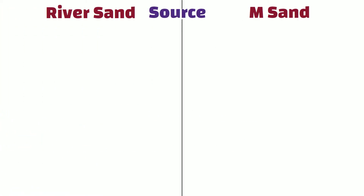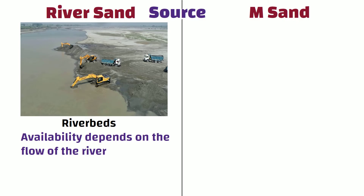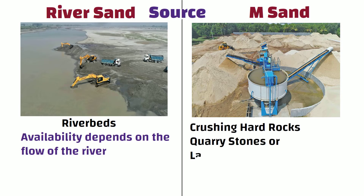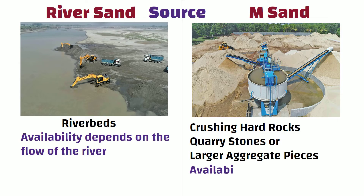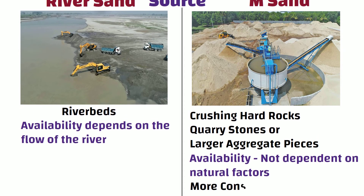River sand is naturally available in river beds, and its availability depends on the flow of the river. In contrast, manufactured sand is artificially produced by crushing hard rocks, quarry stones, or larger aggregate pieces. Its availability is not dependent on natural factors, making manufactured sand a more consistent and reliable source of sand.